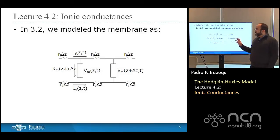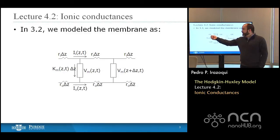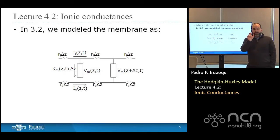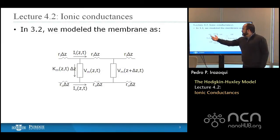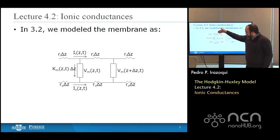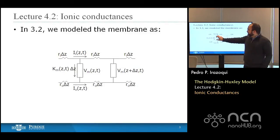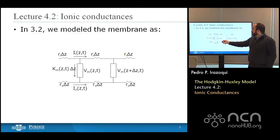In lecture 3.2, we modeled the membrane for the core conductor model as a series of internal resistors per unit length. Ri was the impedance inside the cell per unit length multiplied times some length segment delta Z, and Ro was the impedance outside the cell times delta Z. Between the inside and outside of the cell, you had some membrane current per unit length, K sub m, flowing through a box that we left undefined. That box was to be replaced by the equivalent circuit for the membrane itself, which we did in the cable model.